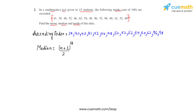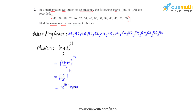As we already know that the value of n is 15, let's start substituting. So we write 15 plus 1 divided by 2, which gives us the middle most term. So we get 16 by 2, meaning the middle most term is the 8th term. From the given data already arranged in ascending order, we get to know that the 8th term's value is 52. So the median for the given data is 52.